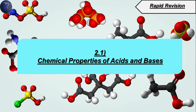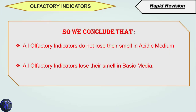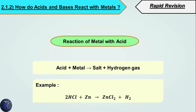Let's start the rapid revision of chemical properties of acids and bases. First, let's talk about how indicators change with acids and bases. Acid converts blue litmus paper to red, methyl orange to red, and there is no change in the color of phenolphthalein. Base converts red litmus paper to blue, phenolphthalein to pink, and methyl orange to yellow. Regarding olfactory indicators, all olfactory indicators do not lose their smell in acidic medium, but all olfactory indicators lose their smell in basic medium.